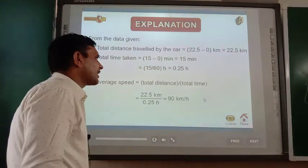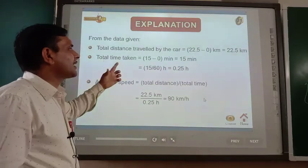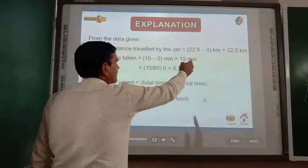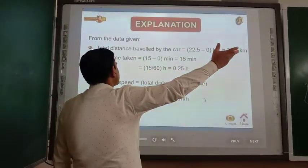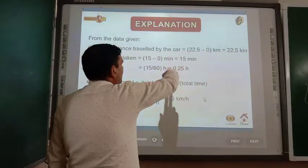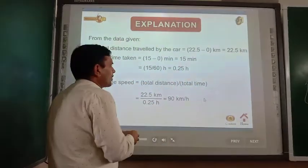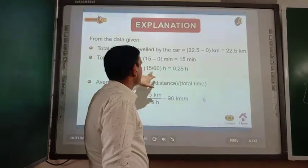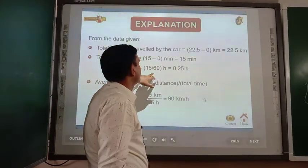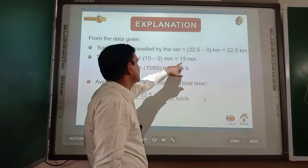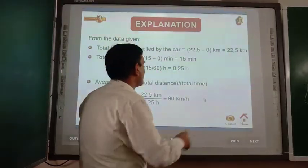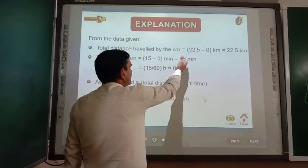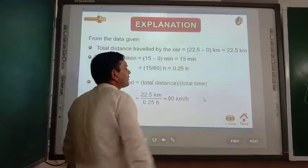The total distance travelled by the car can easily be added — 22.5 km is the final odometer reading representing total distance covered. The time is given in minutes, so we convert to hours. Since we are converting a smaller unit into a bigger unit, we use division: 15 divided by 60 equals 0.25 hours. Add up all time values similarly and you will get the total time to calculate the average speed.